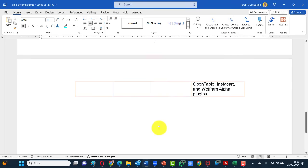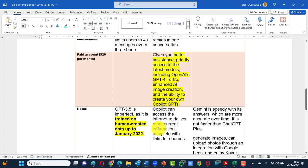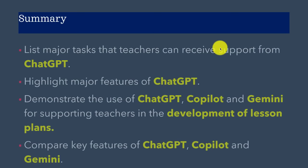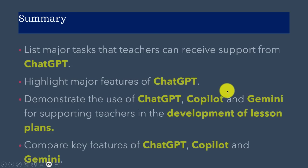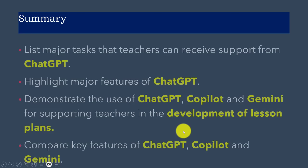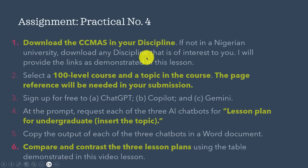I'll be explaining more details later so as not to make this video too lengthy. I will be sharing a full version in Lesson 5. So what have we learnt in this lesson? We listed the major tasks where teachers can receive support using ChatGPT — that's the heart of the matter. Then we demonstrated how we can use ChatGPT, Copilot, and Gemini for one particular task: development of lesson plans. The next lesson — Lesson 5 — will be looking at some other tasks. We also compared the features of ChatGPT, Copilot, and Gemini.